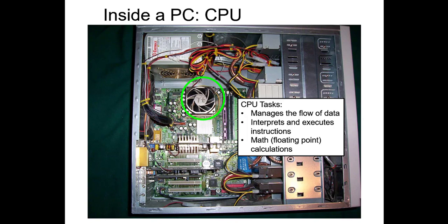Finally, CPUs can do math. The fancy term often used is floating point calculations, meaning they're not simply dealing with integers or just ones and zeros, but they're able to deal with fractional numbers — numbers with decimal points — so they're able to deal with real numbers. These are the three basic tasks of the CPU: manages the flow of data, interprets and executes instructions from the software, and it can do math.